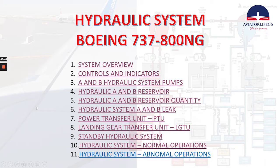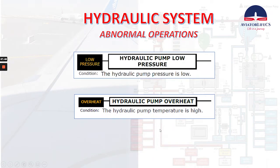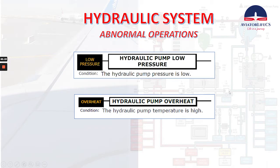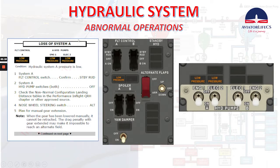Now we will review abnormals for the hydraulic system and we'll start with the checklists available on the QRH. I will pay more attention to three of them: loss of system A, loss of system B, and manual reversion. I also want to mention low pressure — hydraulic pump low pressure condition — and overheat — hydraulic pump overheat condition where the hydraulic pump temperature is high.